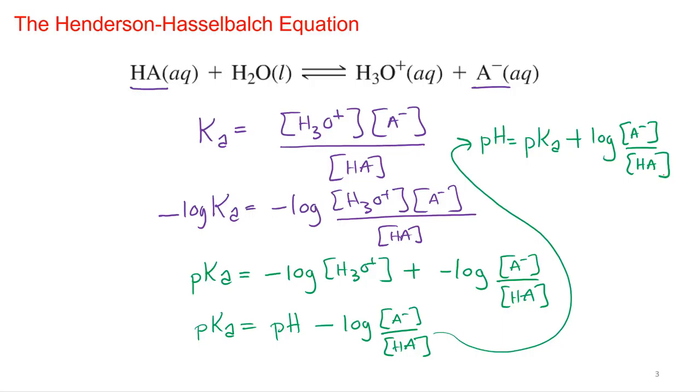So you've got your, you know your concentration of your base, you know your concentration of your weak acid. Take the log of that ratio, add it to the pKa, which is just the negative log of the Ka, and you've got pH.